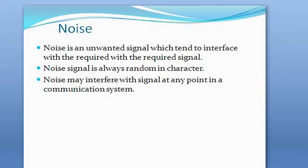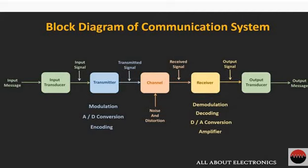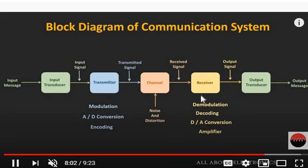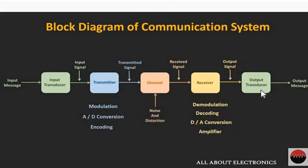The transmitted signal will reach the receiver. A receiver extracts the desired message signals from the received signals at the channel output. The receiver performs demodulation, decoding, D-to-A conversion, and amplification to recover the message signal. After the receiver, the signal is given to an output transducer, which converts the electrical signal back into the message signal.